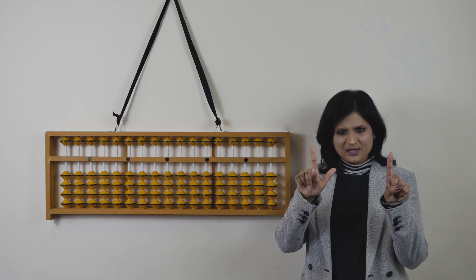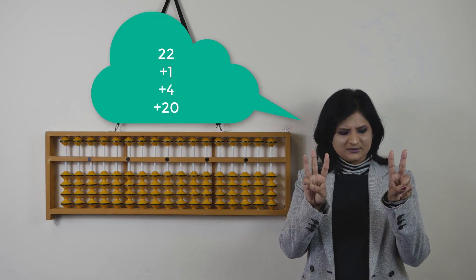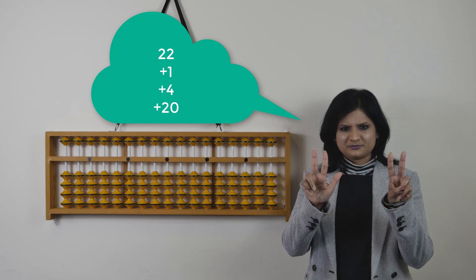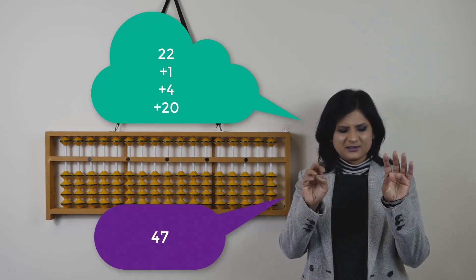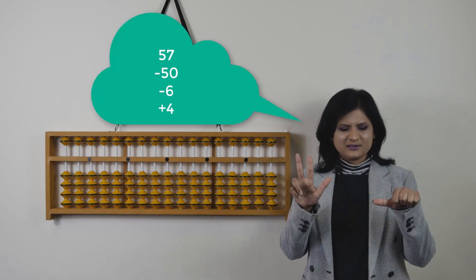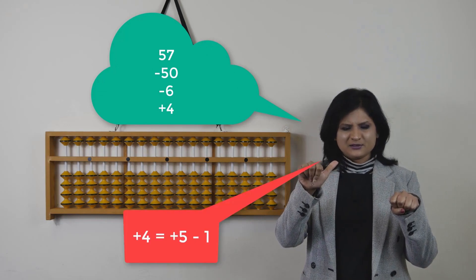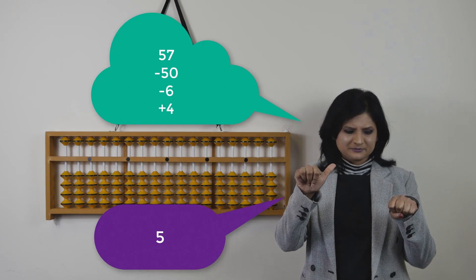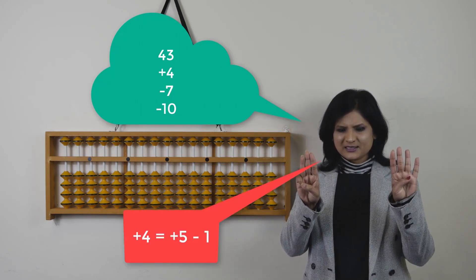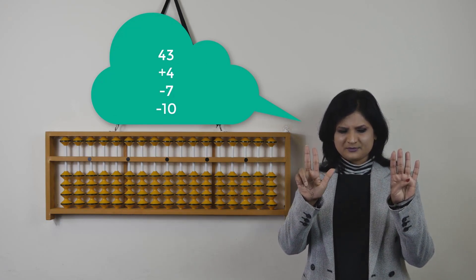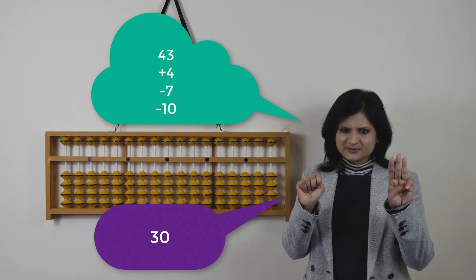Look at the movements of my fingers and you'll understand how I'm adding 4. Another sum: 22, add 1, add 4, add 4, add 20. The answer is 47. Next sum: 57, take away 50, take away 6, add 4, add 4, add 4. Add 4 is add 5 take away 1. The answer is 53. Then: add 4, take away 7, take away 10. The answer is 30.